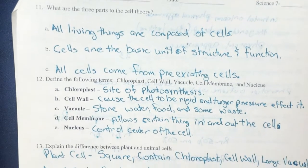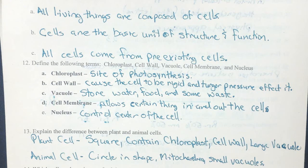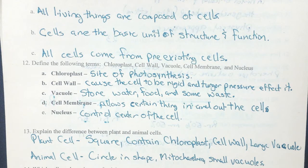Number 12: define the following terms. Chloroplast is the site of photosynthesis. The cell wall causes the cell to be rigid and is affected by turgor pressure, or water pressure, within it. The vacuole stores water, some food, and some waste products. The cell membrane allows certain things in and out, like a door. The nucleus serves as the control center of the cell and tells everything what to do.